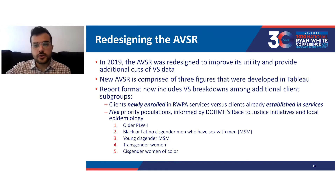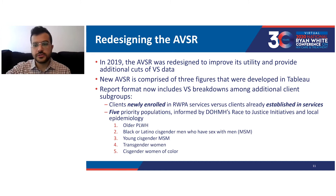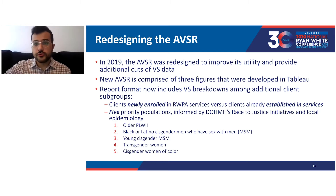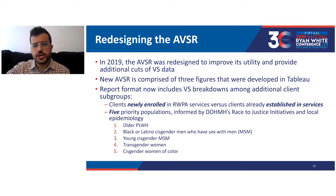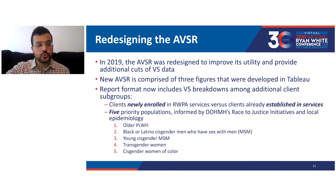In 2019, the AVSR was redesigned to improve its utility and provide additional breakdowns of viral suppression data. The new AVSR is comprised of three figures developed in Tableau for enhanced data visualization. The new report format includes viral suppression breakdowns among clients newly enrolled versus clients already established in services, and breakdowns among five priority populations informed by DOHMH's Race to Justice initiatives: older people living with HIV, Black or Latino cisgender MSM, young cisgender MSM, transgender women, and cisgender women of color.